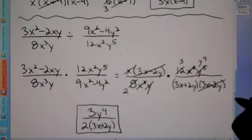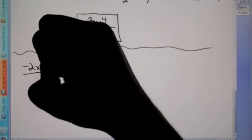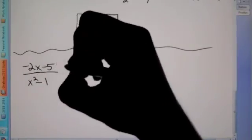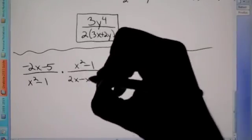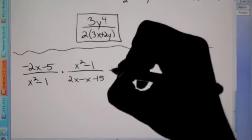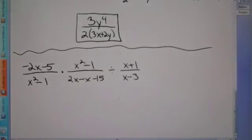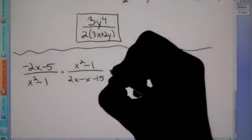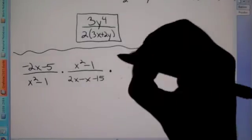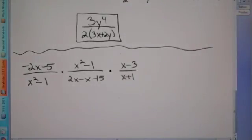Let's do one more problem. It may look more difficult, but in actuality it's the same type of problem. We have negative 2X minus 5 over X squared minus 1, times X squared minus 1 over 2X squared minus X minus 15, divided by X plus 1 over X minus 3. We don't like the division symbol, so we can change it by flipping this fraction. Instead of a division symbol, I'm going to change it to multiplication — and I can do that by flipping this to X minus 3 over X plus 1. I just flipped the fraction that was after the division symbol.